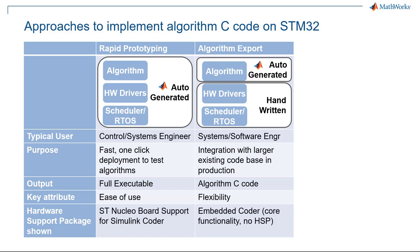These two workflows are best suited for different situations. Rapid prototyping is great for projects in the R&D phase, where a controls engineer wants to run an algorithm on real hardware as easily as possible and collect data to evaluate its performance. This method can even be suitable for low volume production projects, and we'll show this with the Nucleo board support package. Algorithm export caters to high volume production projects or ones with significant hand code infrastructure that will integrate the exported Simulink algorithm code.